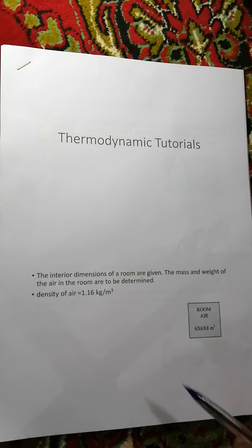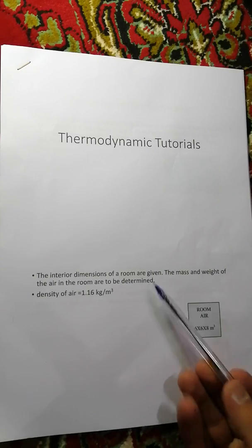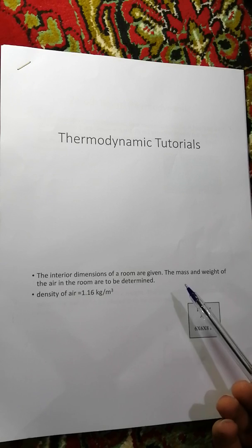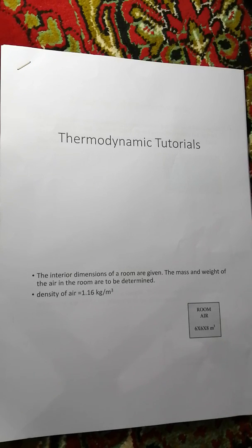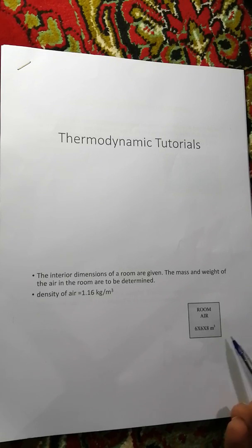The internal dimensions of a room are given. The mass and weight of the air in the room are to be determined. The dimensions of the room are 6 by 6 by 8 meters, with a height of 6.5 meters.